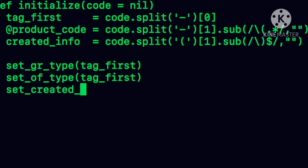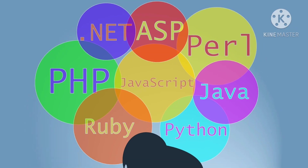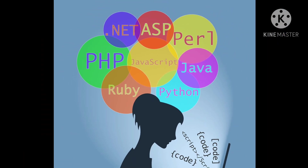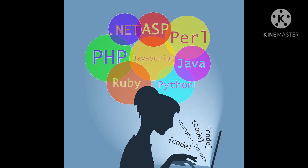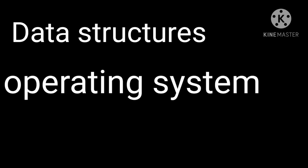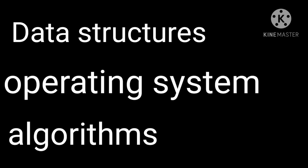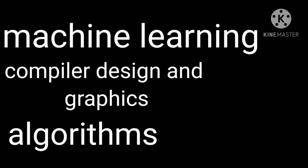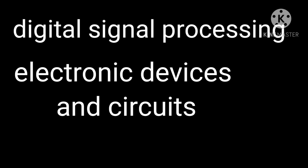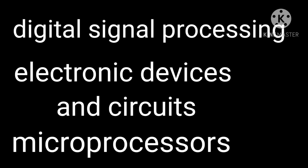There are different programming languages like C, C++, Java, Python, and so on. Programming languages are part of a broader curriculum that includes data structures, operating systems, algorithms, machine learning, compiler design, graphics, artificial intelligence, digital signal processing, electronic devices and circuits, and microprocessors.